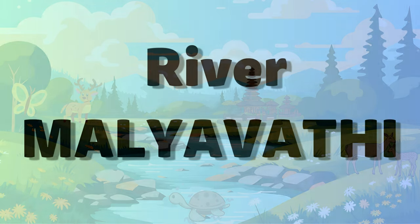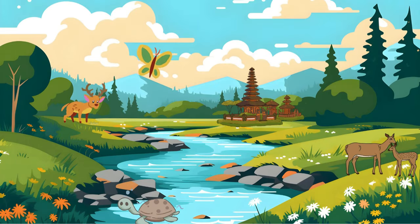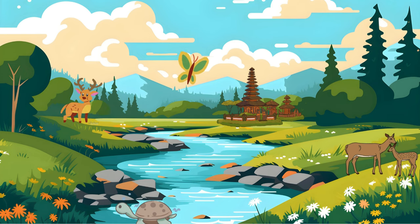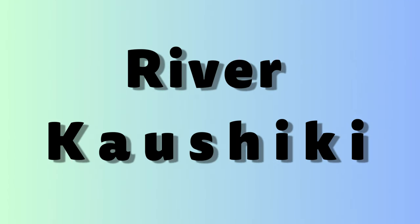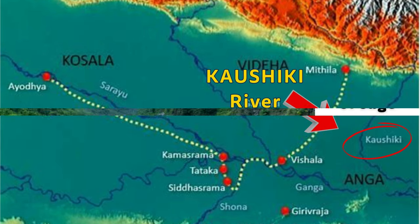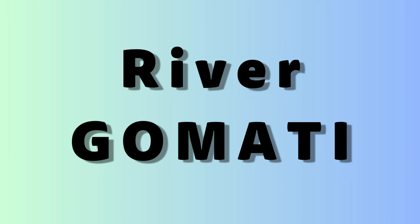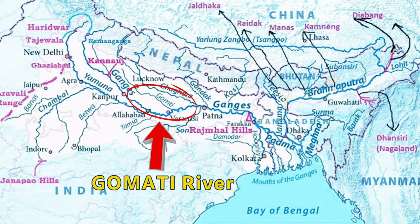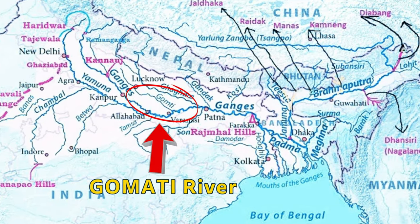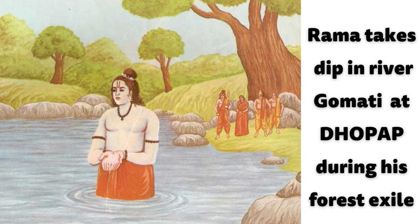River Malayavati: The beautiful Malayavati river made Rama forget the sorrow of leaving Ayodhya. River Kaushiki: River Kaushiki is also known as the Koshi river. In the Ramayana, river Kaushiki is mentioned as the sister of sage Vishwamitra. River Gomati: Lord Rama is believed to have taken a dip in the Gomati river at Dhopap on the advice of sage Vashistha.